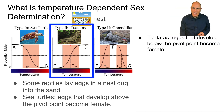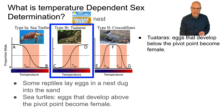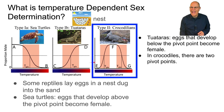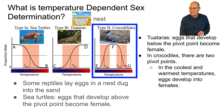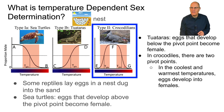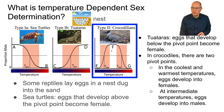In another kind of reptile called a tuatara, it's the opposite: developing above the pivot point gives a higher chance of being male, while below the pivot point the proportion of males goes down and females are more likely. In crocodiles, there are two pivot points — a low temperature one and a high temperature one. At the coolest and warmest temperatures, eggs develop into females, but at intermediate temperatures, the eggs develop into males.